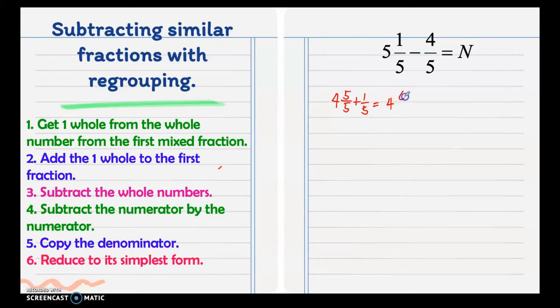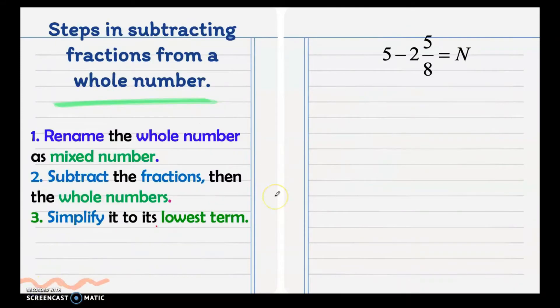We have 4 and 6/5. Then we can now subtract this to 4/5. Subtract the whole numbers, we have 4 minus 0 that is 4. Then subtract the numerator by the numerator, we have 6 minus 4 is 2. Copy the denominator. Then reduce to its simplest form. 2 and 5 is already in simplest form. Our answer is 4 and 2/5.